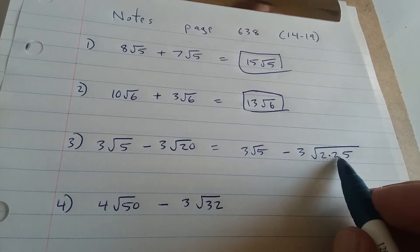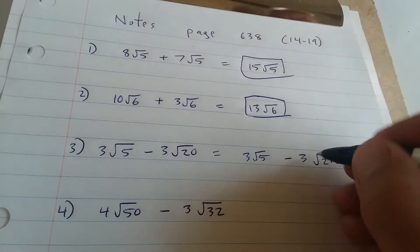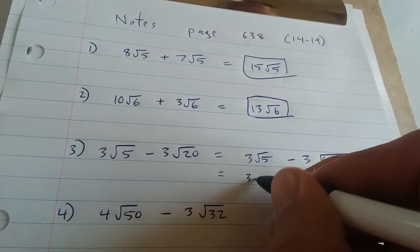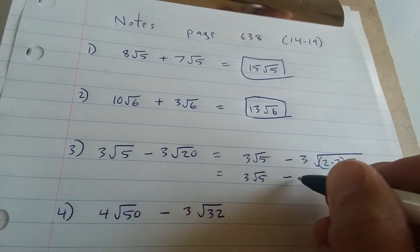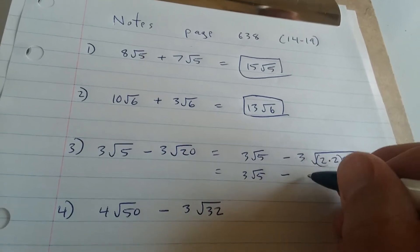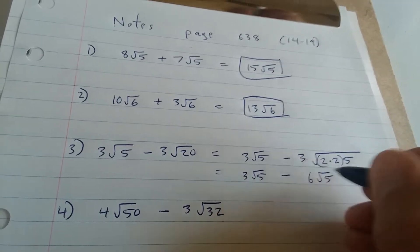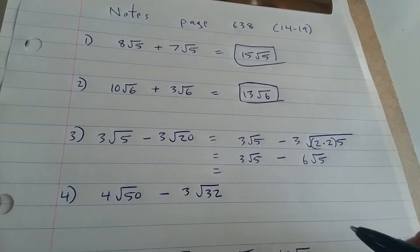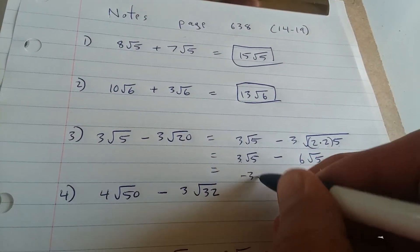Now we can pull a 2 out. We have a pair of 2's under the root, so we can pull that out and multiply this 3 by 2. So that is 3 root 5 minus 3 times 2, which is 6 root 5. 3 minus 6 is negative 3, so we're going to have negative 3 root 5 here.